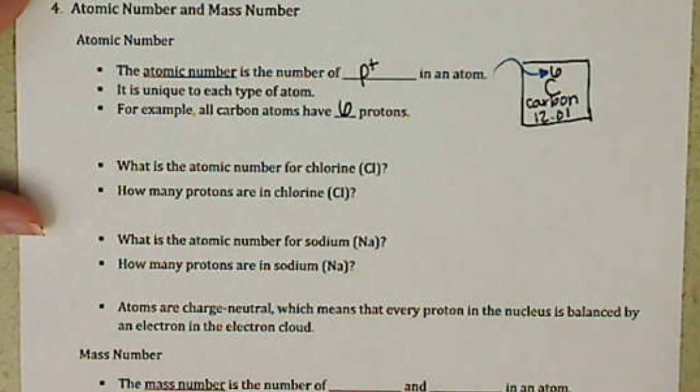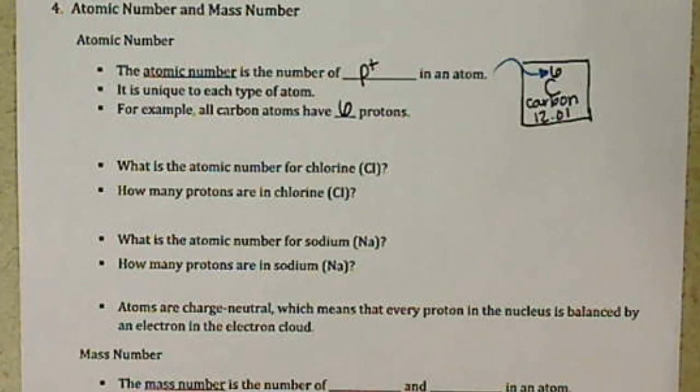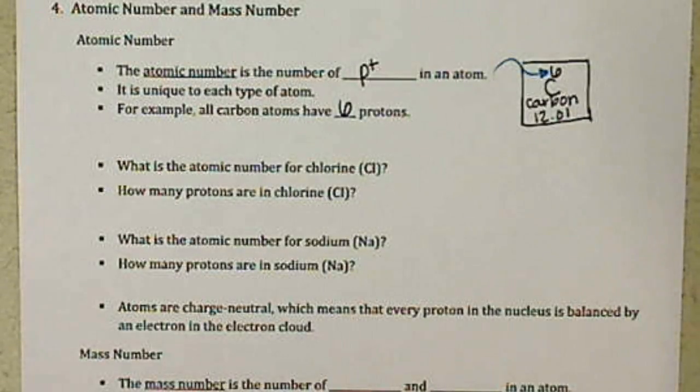Doesn't matter where we find that carbon atom, doesn't matter how many we find, each one of those carbon atoms has six protons. If we find an atom and we know that it has six protons, that atom is a carbon. So the number of protons dictate which element we're looking at.